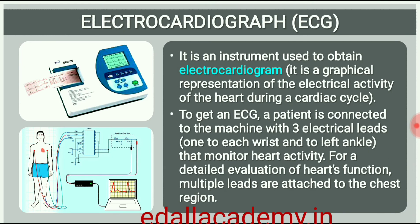Electrocardiograph (ECG). You are probably familiar with this scene from a typical hospital television show: a patient is hooked up to a monitoring machine that shows voltage traces on a screen. This type of machine, electrocardiograph, is used to obtain an electrocardiogram, ECG. ECG is a graphical representation of the electrical activity of the heart during a cardiac cycle. To obtain a standard ECG, a patient is connected to the machine with three electrical leads, one to each wrist and to the left ankle, that continuously monitor the heart activity. For a detailed evaluation of the heart's function, multiple leads are attached to the chest region.